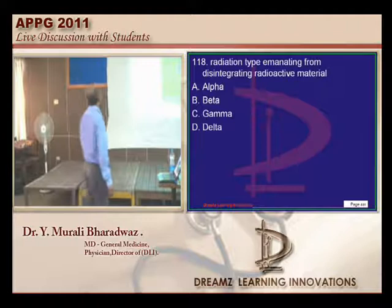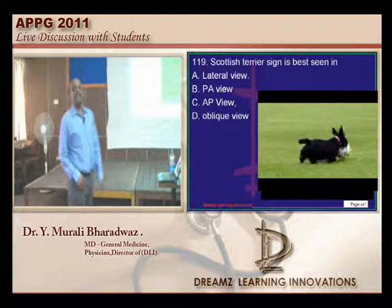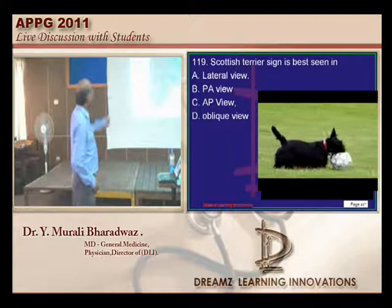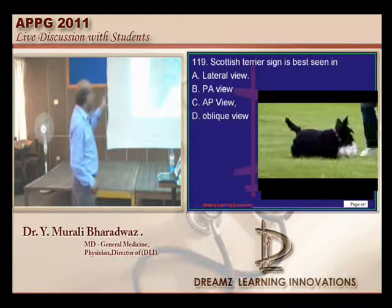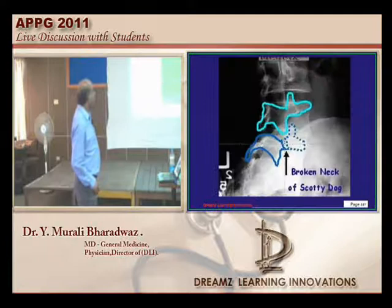Can you guess what a Scottish dog looks like? It has a tall neck. The most commonly wrongly answered answer was the lateral X-ray view. The correct answer is the oblique view. Whenever there is spondylolisthesis, it looks like the Scottish Terrier dog's neck — the dog has a very tall neck with a belt around it. That is how it looks on X-ray. Maybe the radiologist is from Scotland.